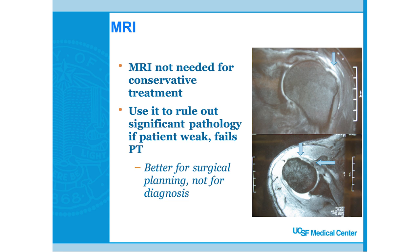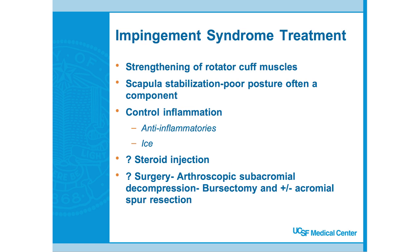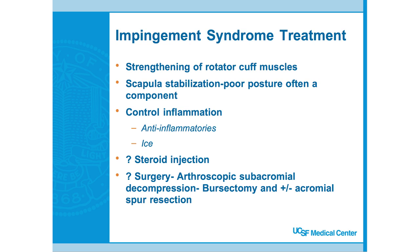You don't usually get an MRI when you suspect impingement, as long as the patient has good rotator cuff strength. We only order an MRI when someone is weak — so a good physical exam is critically important. First-line treatment for impingement is strengthening of the rotator cuff muscles and scapular stabilizers to address poor posture and mechanics. Control inflammation with ice and anti-inflammatories. Cortisone injection is reserved when patients fail first-line physical therapy and anti-inflammatories.